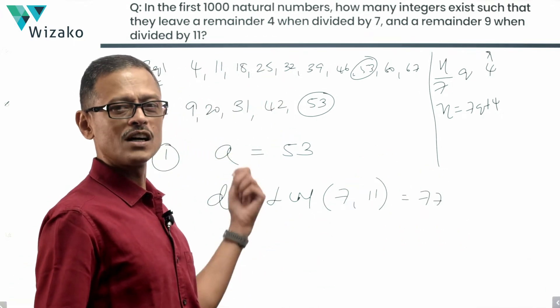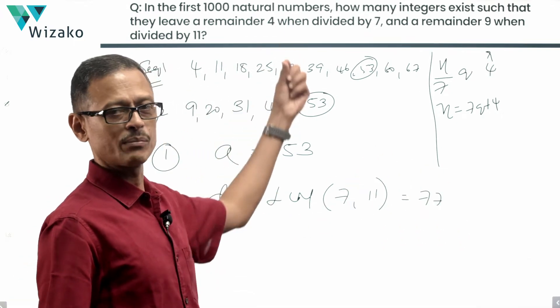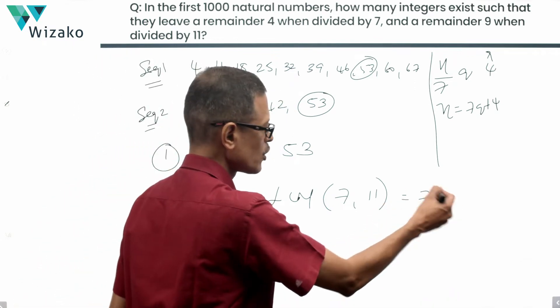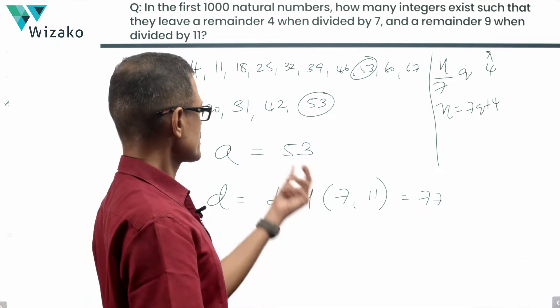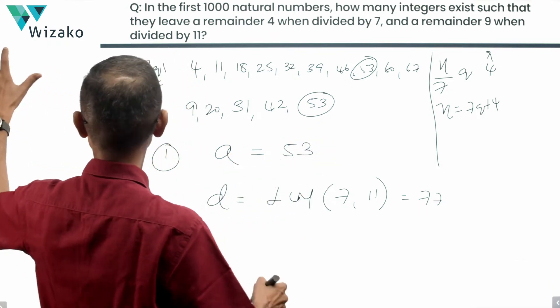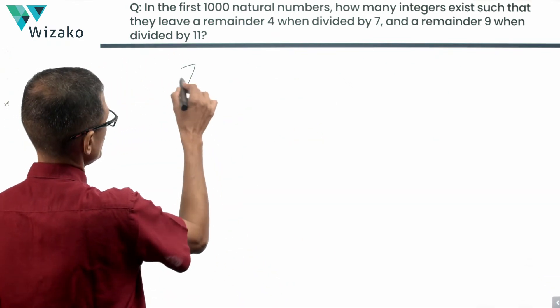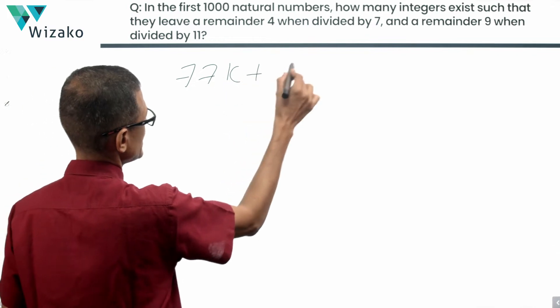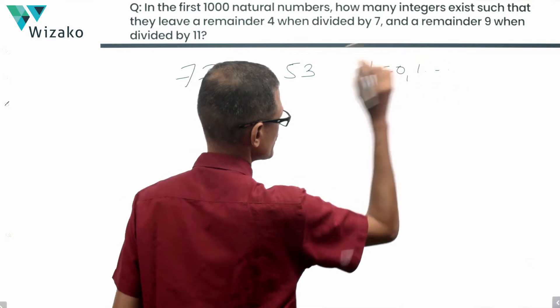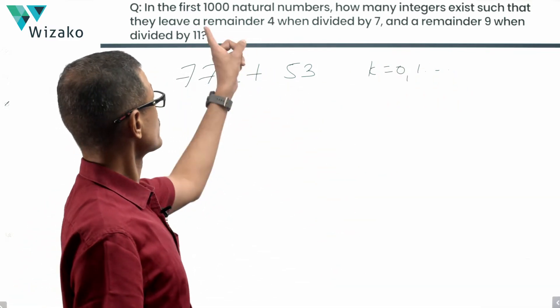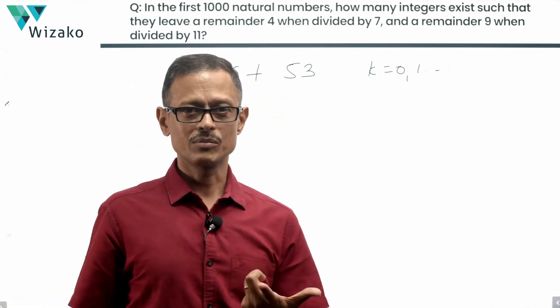So how will the terms of our sequence look, which will satisfy both the conditions? It is going to move with a common difference of 77, which means it's going to be 77K plus the first term being 53. So essentially the sequence is what we are looking for is 77K plus 53, where K takes values from 0 and goes on. It's not going to go up to infinity because we are going to stop at the first 1000 natural numbers.